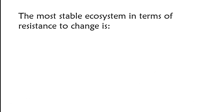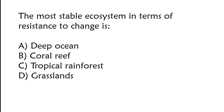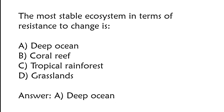The most stable ecosystem in terms of resistance to change is: A) deep ocean, B) coral reef, C) tropical rainforest, D) grasslands. The correct answer is option A, deep ocean.